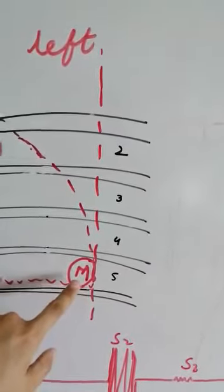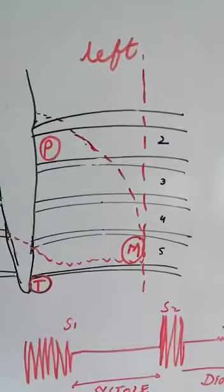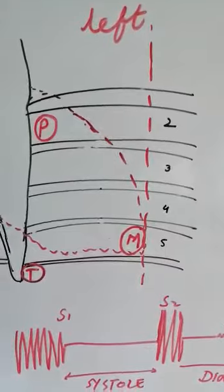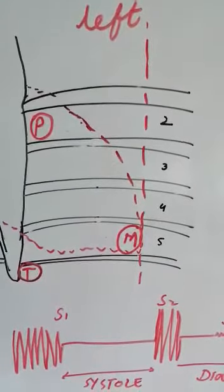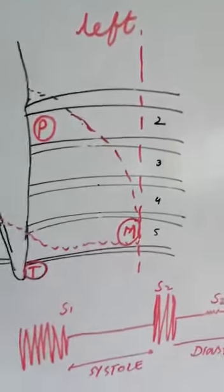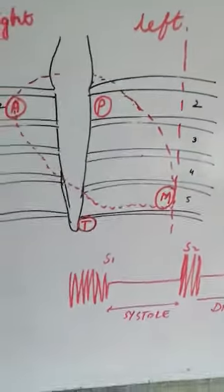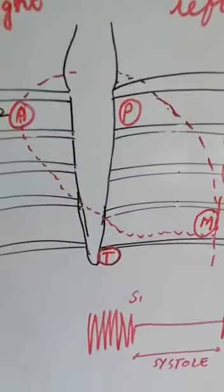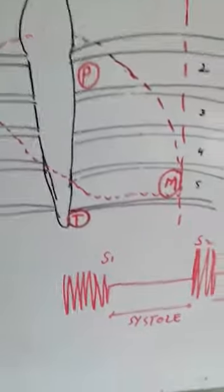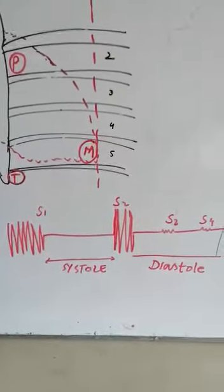The apical area is where we palpate the apex beat, which is the lowermost and outermost part of the heart where definite cardiac pulsations can be felt. This is also a viva question. You auscultate the heart sounds with the help of a stethoscope. There are four heart sounds which you will study in your theory — first, second, third, and fourth heart sound.